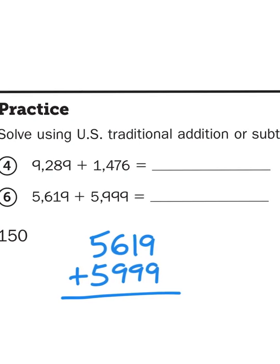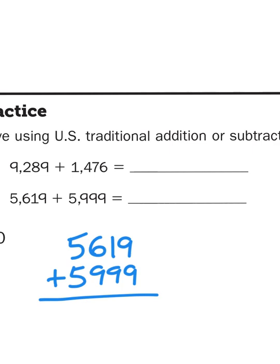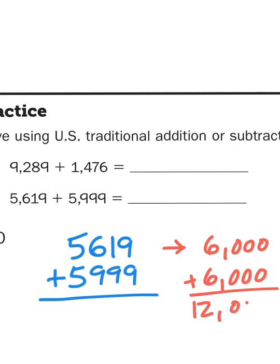Now since we were doing some estimation in the previous lesson, why don't we just take a look real quick and determine about how big should my answer be. Well, if I round 5,619 to the nearest thousand, it's going to round up to 6,000, and the bottom number, because it's just one off, rounds to 6,000 as well. So if I add those two together, I'm going to get a total of about 12,000. Okay, so my answer should be about that big. So let's do the calculations.